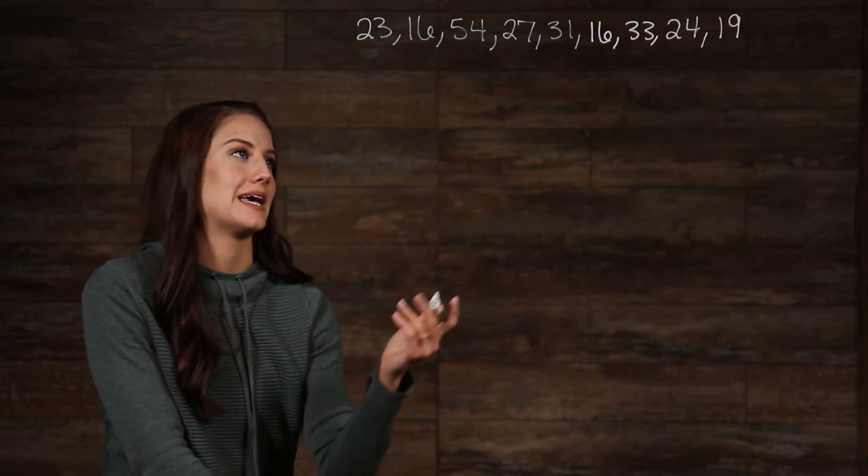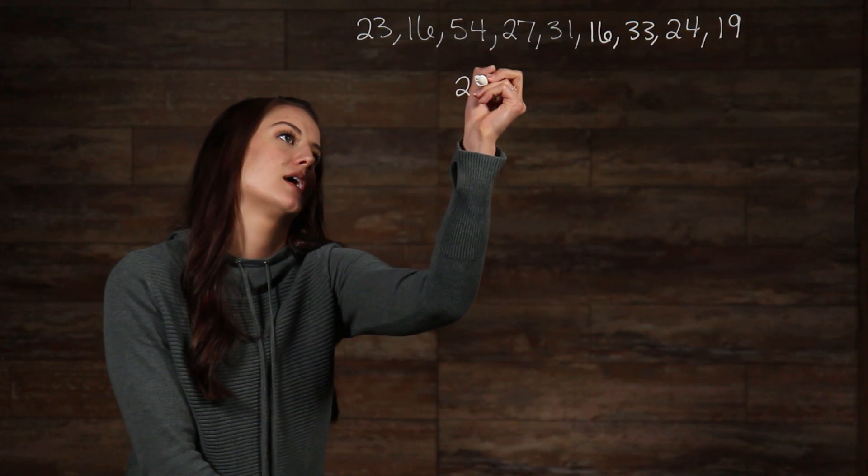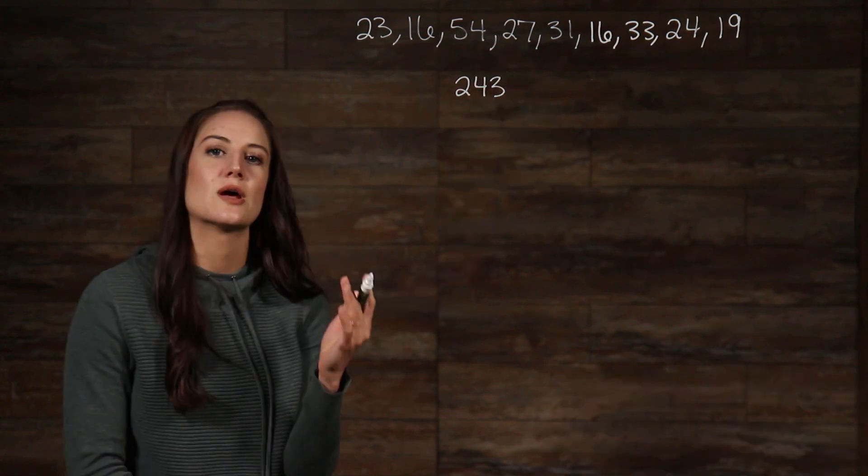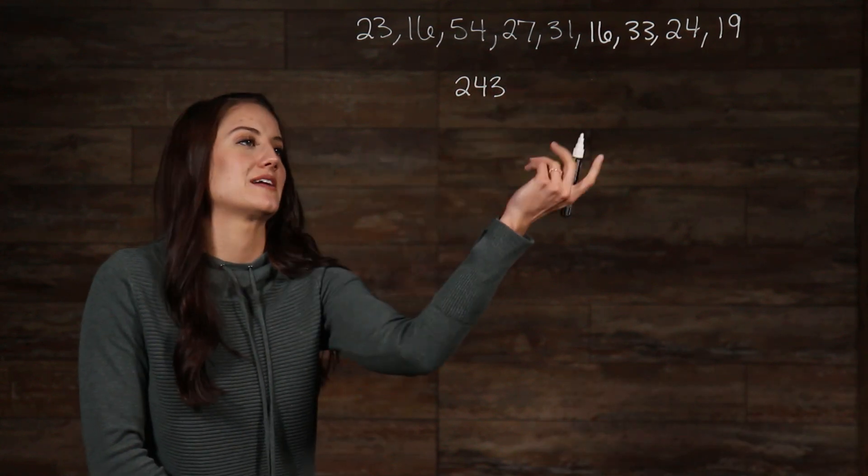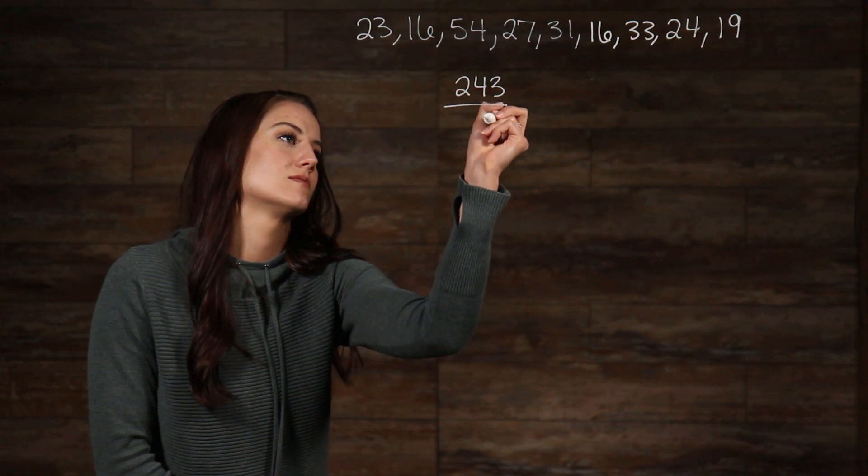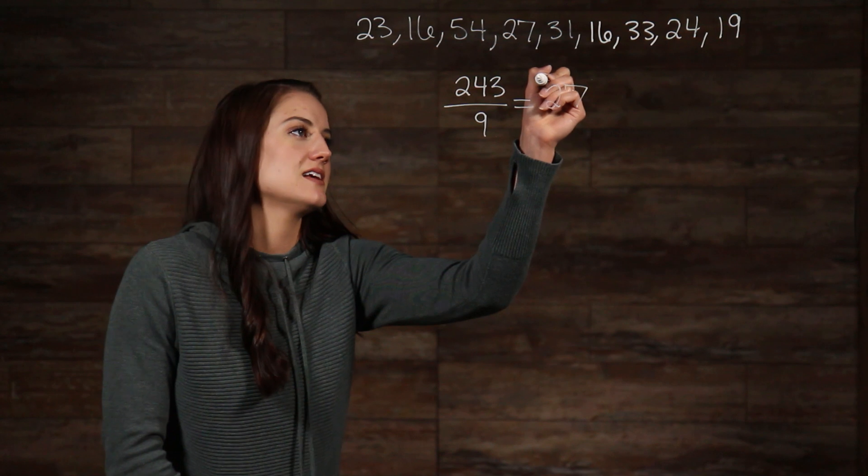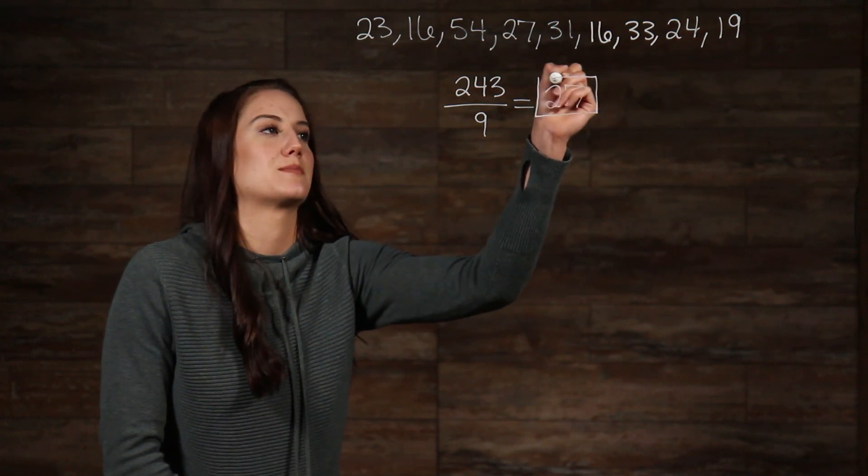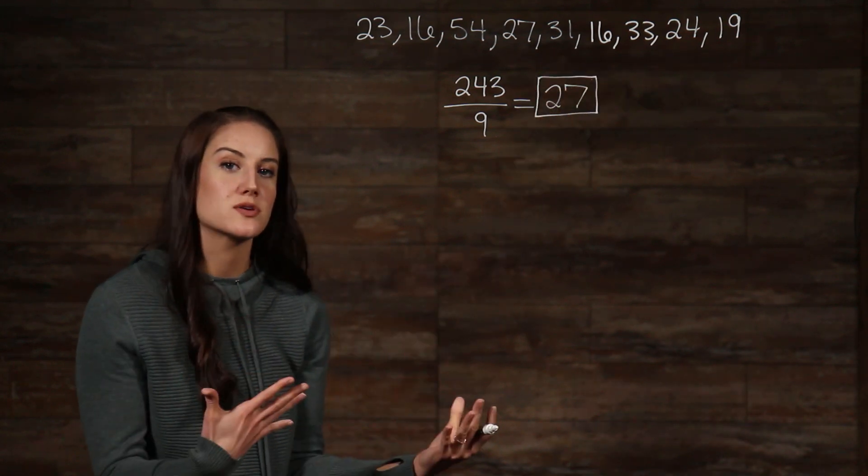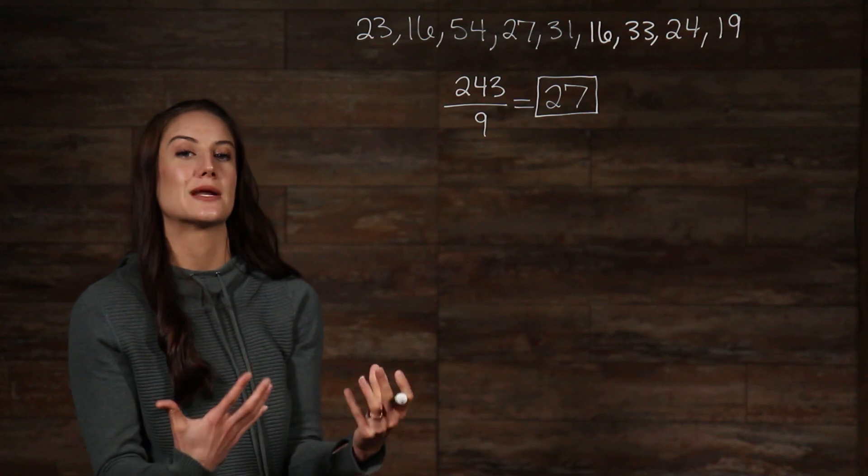When we add up all the numbers, we get 243. So, now we take this number and divide it by nine to get 27. And that is all there is to finding the mean. You add up all the numbers on the list, then divide by how many numbers there are.